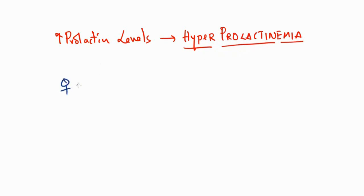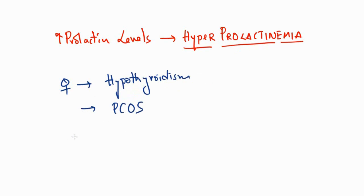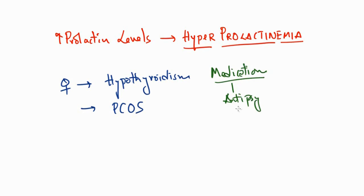In females, the causes can include hypothyroidism — one of the most common causes resulting in increased prolactin — and PCOS (polycystic ovarian syndrome), which is another cause of elevated prolactin levels. Other causes include the use of specific medications, particularly antipsychotics and dopamine blockers, as all drugs which block dopamine levels are also known to increase prolactin levels.